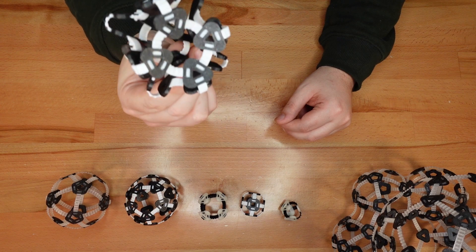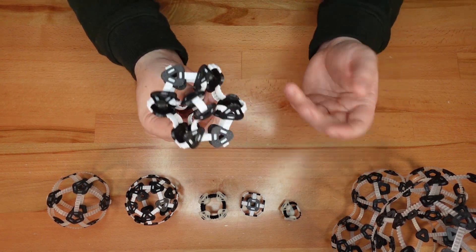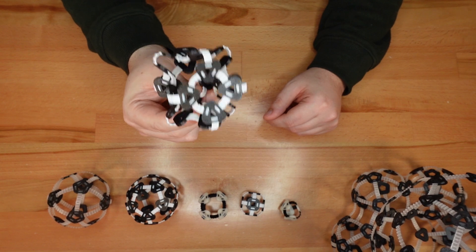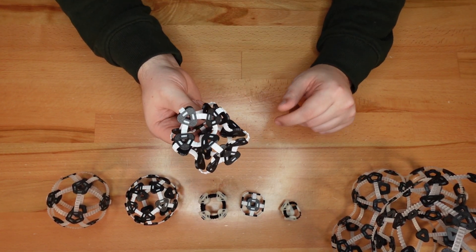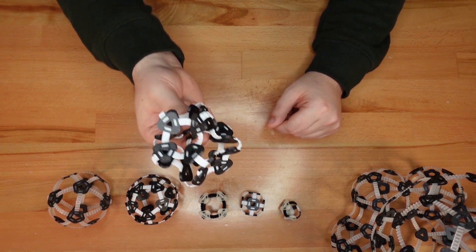This shape is one of my favorite discoveries while playing around with the toy. I don't know if it has an official name, but each of its six sides is bistable. It can pop back and forth between two positions.